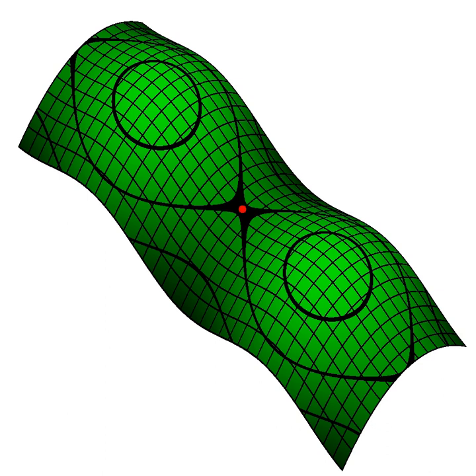Surfaces closed in both directions include a sphere and a torus. Moving in any direction on such surfaces will cause the observer to travel forever without hitting an edge.